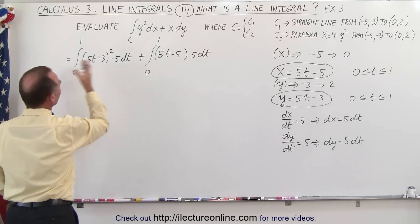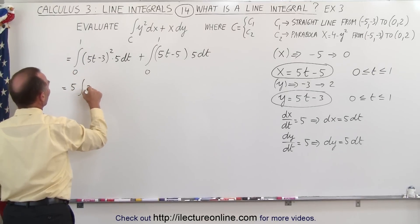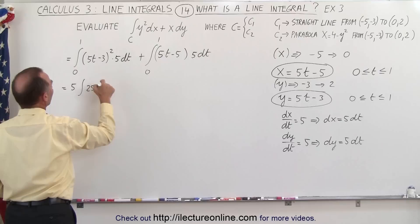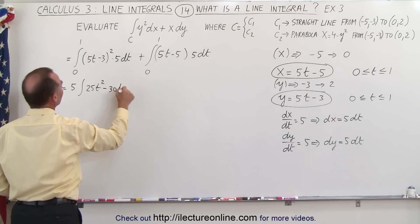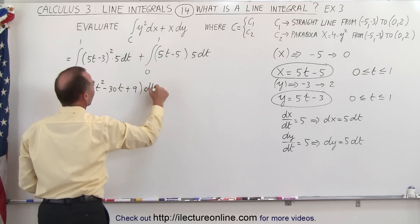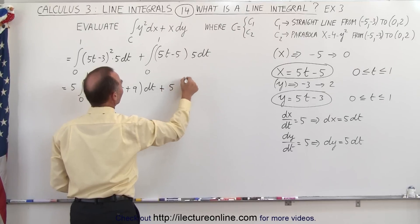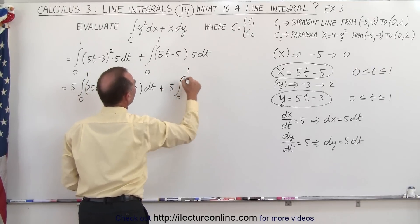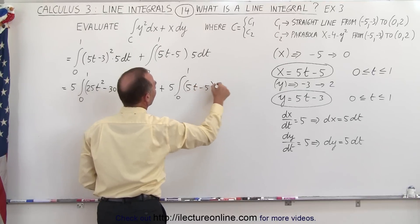So simplifying this a little bit and pulling out the 5, so this can be written as 5 times the integral of 25t squared, twice the product, that would be minus 30t plus 9, times dt from 0 to 1, plus 5 times the integral from 0 to 1 of 5t minus 5 times dt.